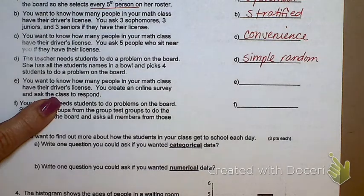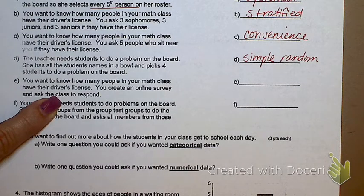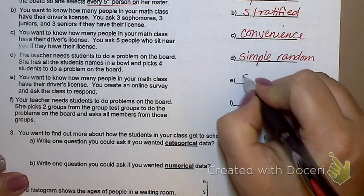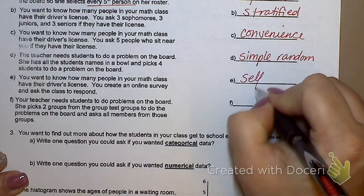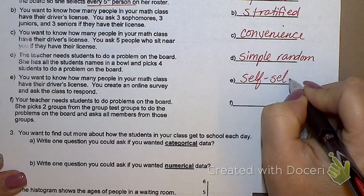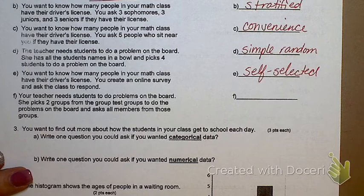You want to know how many people in your math class have their driver's license. You create an online survey and ask the class to respond. What's that one? Self-selected. Why is that self-selected? Because they get to choose if they're going to fill out your survey.